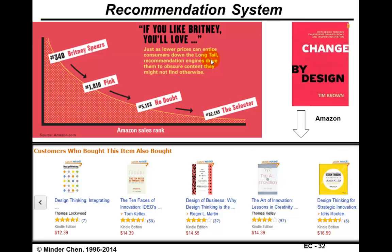What online retailers have done is build something called a recommendation system. Chris Anderson used music as an example: if you go to Amazon looking for music, looking for Britney Spears, the recommendation system may say, 'Since you like Britney, you may also like' other musicians' music — pointing out some other musician or records which are much less popular.